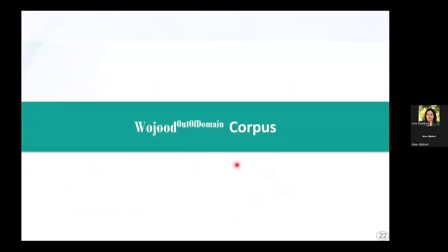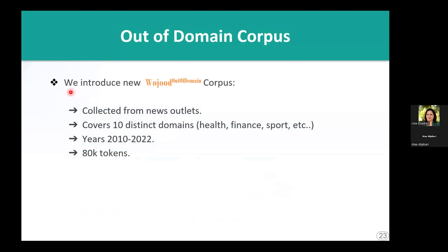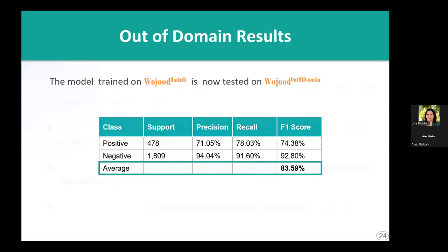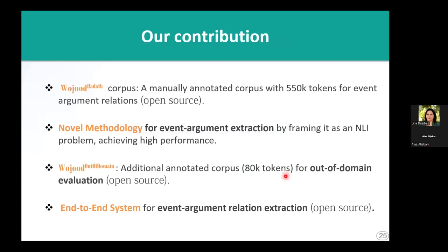The Wujud out-of-domain corpus is another corpus annotated with relations, manually collected from news outlets such as Al-Jazeera and Al-Arabiya. It covers events from 2010 to 2022 across 10 distinct domains and contains 80,000 tokens annotated with the same relations as Wujud Hadath. Our model on the out-of-domain corpus achieves 83.59% F1 score, demonstrating a high level of accuracy and confirming that the model generalizes well to diverse types of text and events.